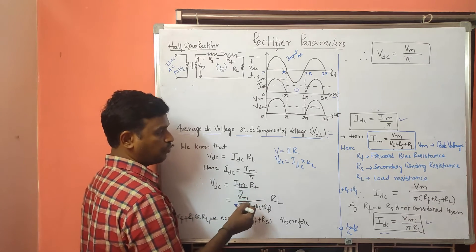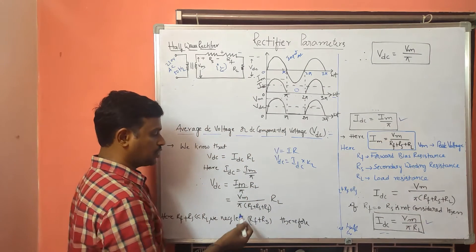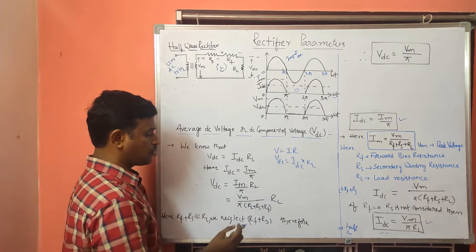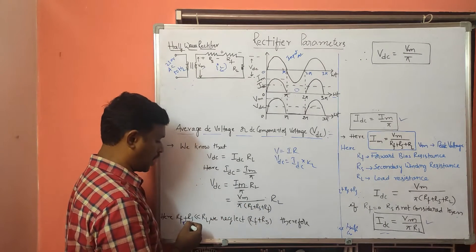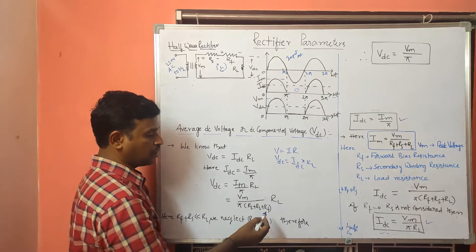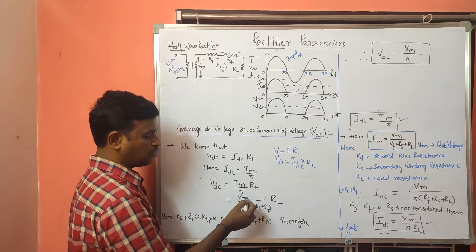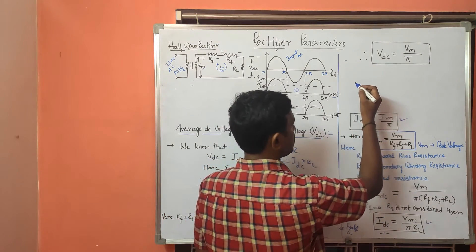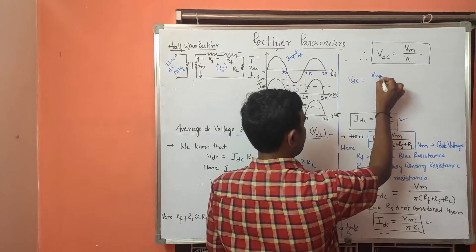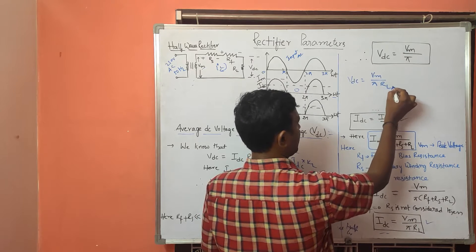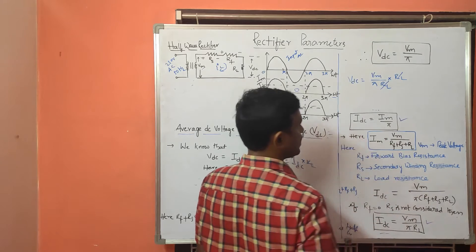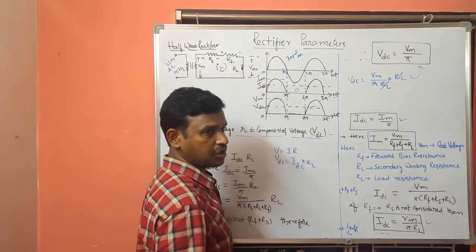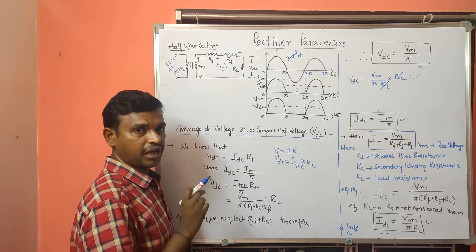Substituting IM = VM / (RL + RF + RS), we get VDC = [VM / (RL + RS + RF)] × RL. Since RF and RS are very small, we neglect them, so RL/(RL) cancels, giving VDC = VM/π.